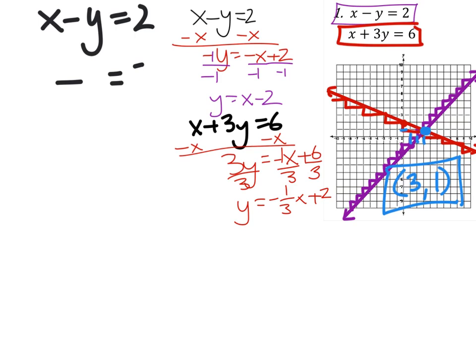So we still have x minus y equals 2. And we'll try 3 and 1. So 3 minus 1 is 2. So it checks on the purple equation.